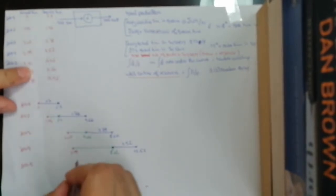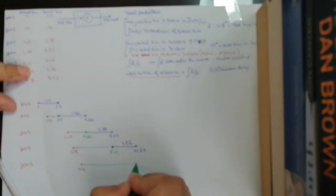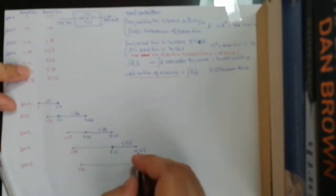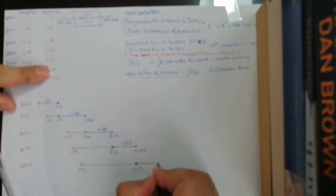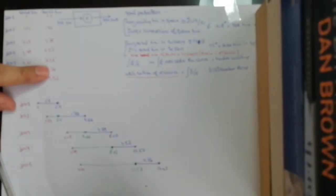Job 5 arrives at 4.41 but waits all the way until 12.57 when job 4 finishes. It is then serviced for 4.47 time units, leaving at 17.06 (approximately 17.03).